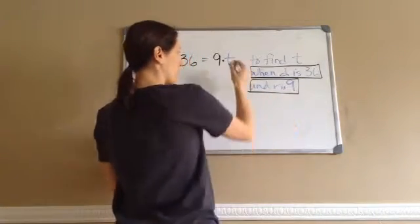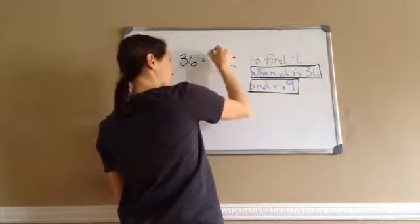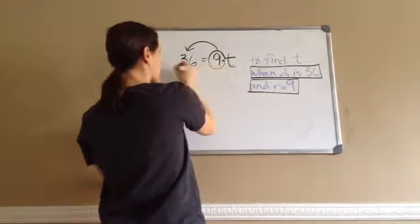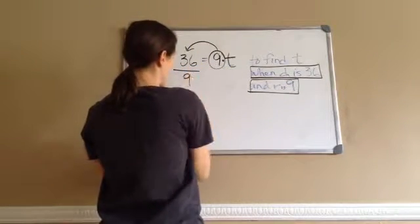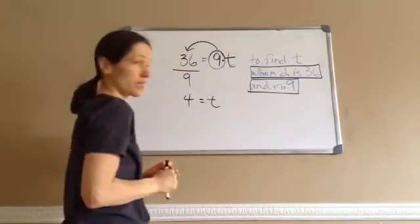Okay, but if you don't automatically know that, then you can try to get T by itself. And so, this times 9, when it goes across the equal, becomes the opposite of times, divided by 9. And so, then 36 divided by 9 is 4. So, T is 4.